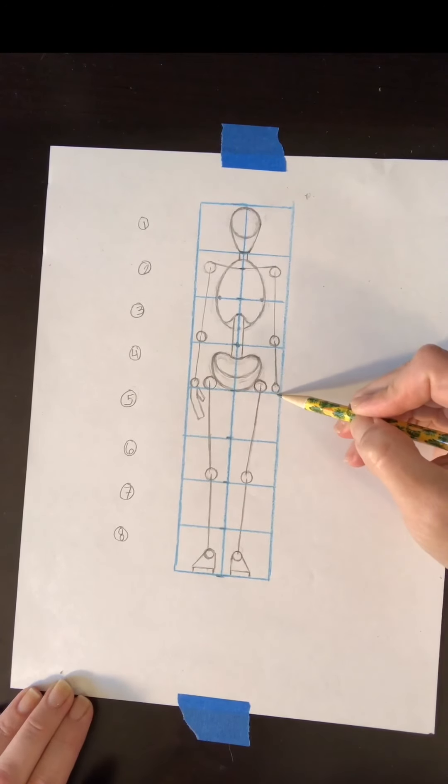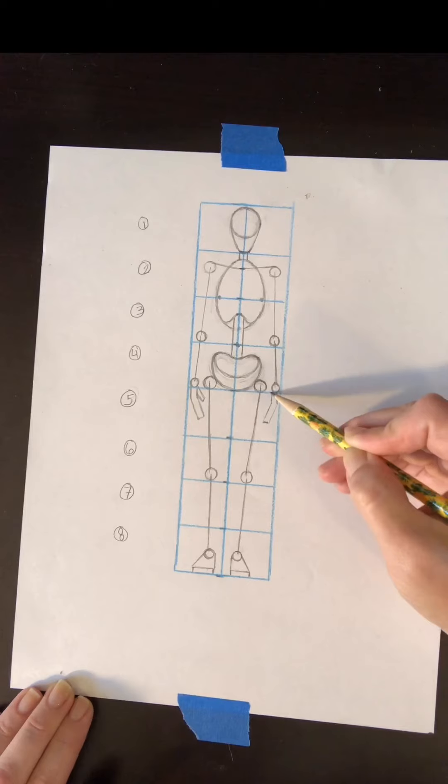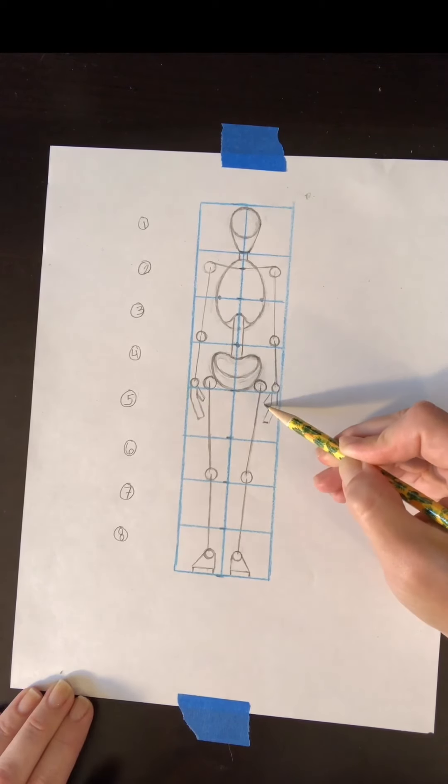So same thing on the other side, two lines straight down, little short ones, two lines angling in towards the figure for the longer fingers, and then we'll add a little thumb right there.